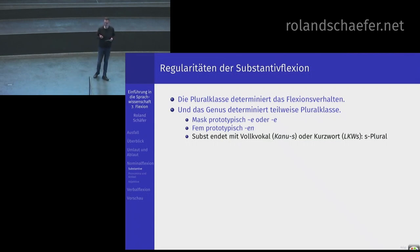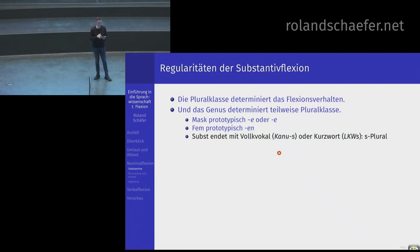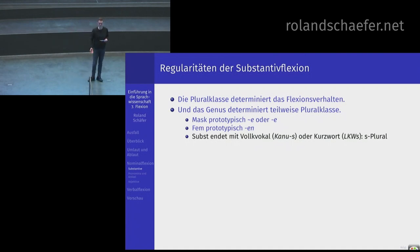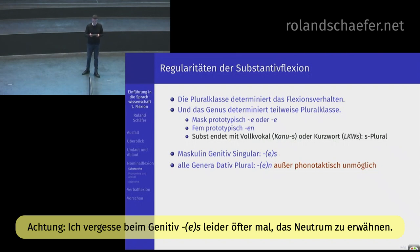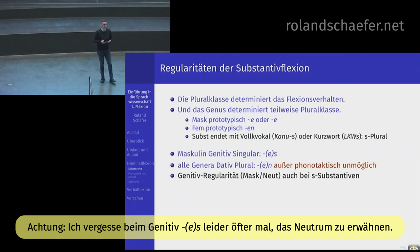Die S-Klasse: Maskuliner, Neutra und Femininer, die ihren Plural mit S bilden – das können Sie auch relativ gut vorhersagen. Das tritt vor allem auf, wenn das Wort auf einem Vollvokal endet, wie Kanu – also nicht Schwa. Dann wird der Plural mit S gebildet: Auto, Oma, Papaya – die Autos, die Omas, die Papayas, die Kanus. Für den Kasus gelten zwei einfache Regularitäten: der maskuline Genitiv Singular wird immer mit S gebildet, und im Dativ Plural wird noch ein N angehängt, außer es ist phonotaktisch unmöglich.